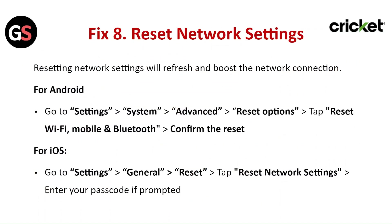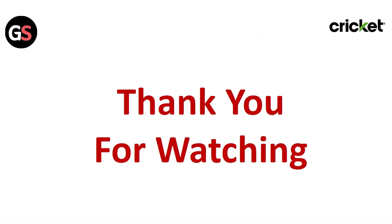Fix 8: Reset the Network Settings. Resetting Network Settings will refresh and boost the network connection. For Android, go to Settings, then System, then Advanced. Click Reset and tap Reset Wi-Fi, Mobile and Bluetooth, then confirm the reset. For iOS, go to Settings, then General, then Reset. Tap Reset Network Settings and enter your passcode if prompted. Thank you for watching — please like this video and subscribe to our channel.